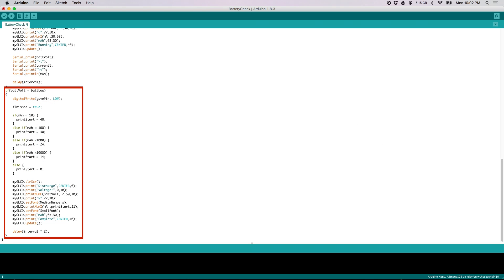Once the voltage drops below our specified threshold, then we'll jump down to the coda that displays the final results of the test and turns off the circuit.